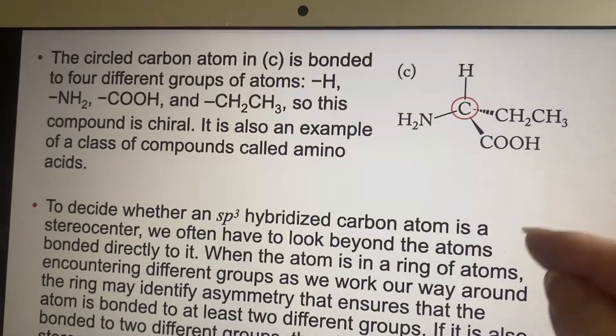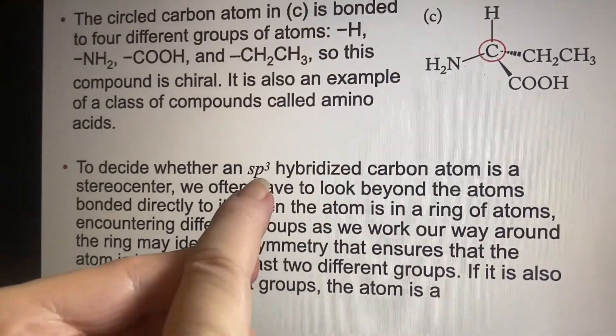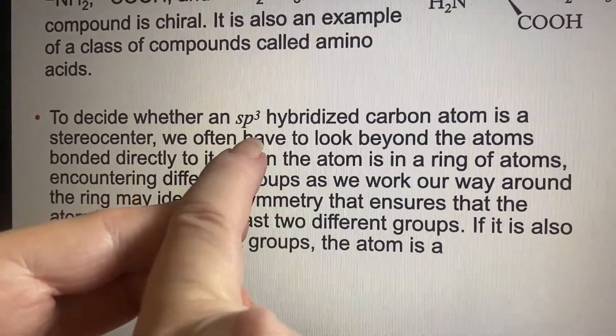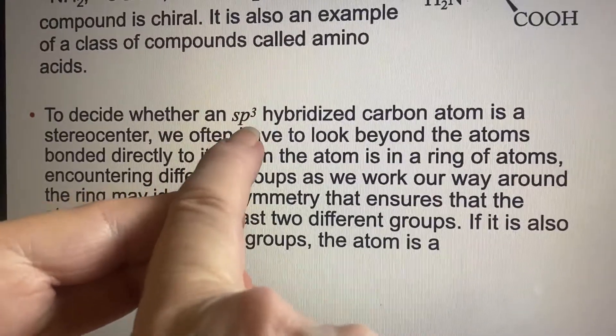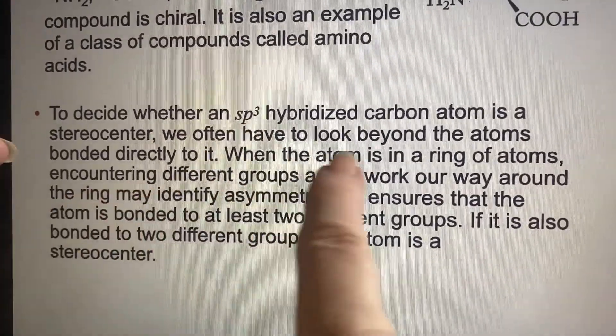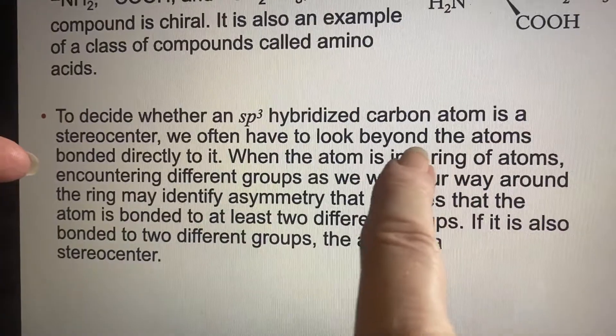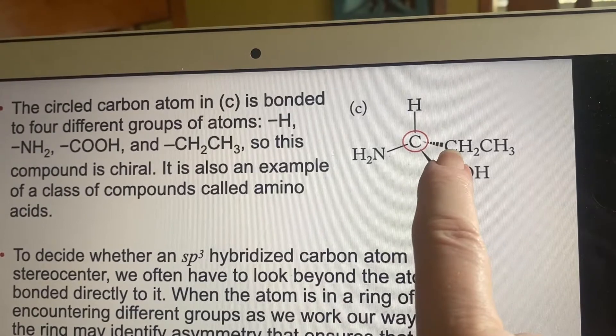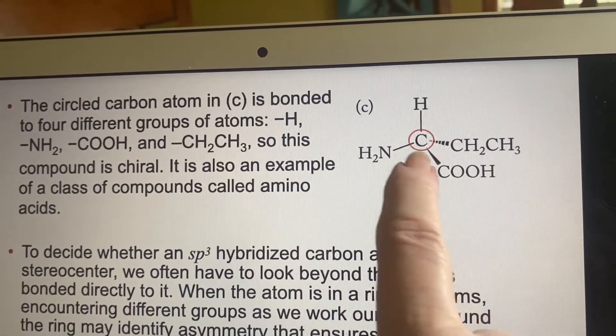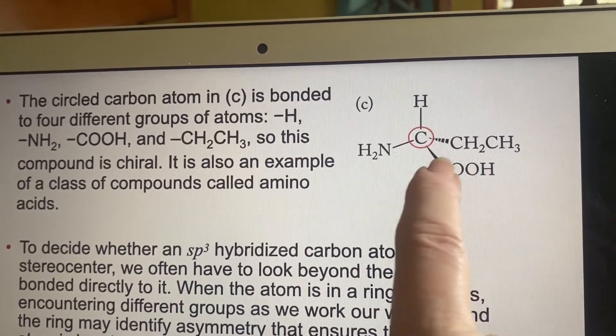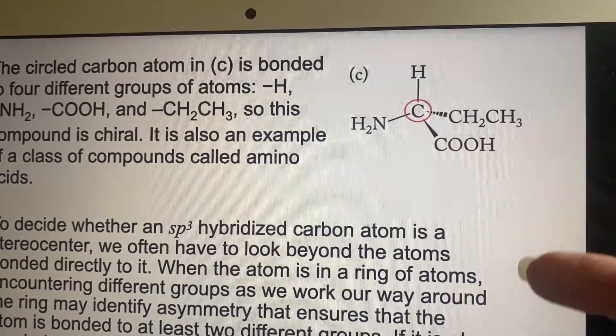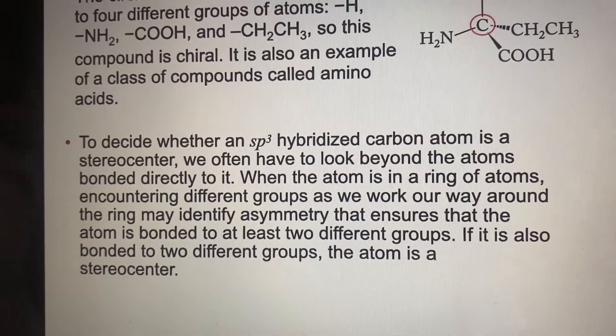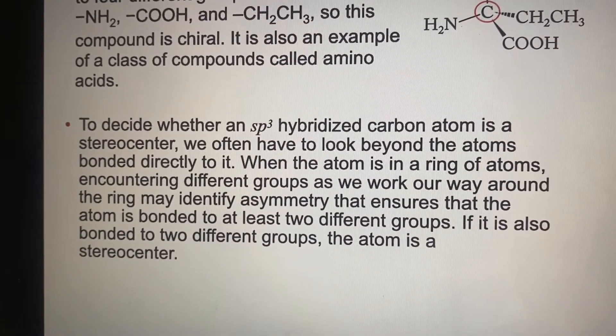So when we look, we're going to look for sp3 hybridized carbon atoms, because those are going to be the ones that are attached to four different things, making four different sigma bonds. So we have to look sometimes past the ones that are right next to it. Because if I just looked at this, the first thing I encounter is just the carbon. If I look this way, it's just the carbon. But the whole group is different from the whole group here. So that's how we're going to identify the sort of asymmetry that will let us identify stereocenters.